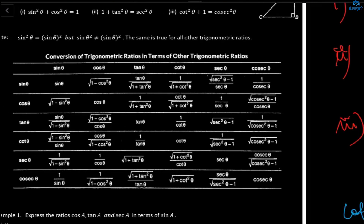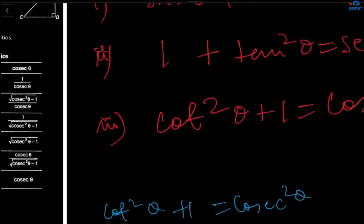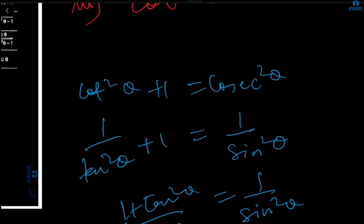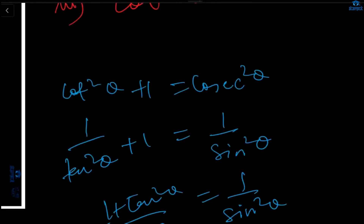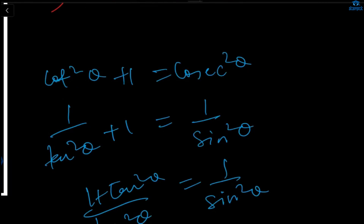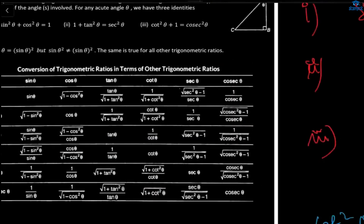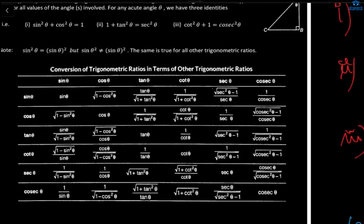Similarly, sinθ in terms of cotθ is 1/√(1 + cot²θ), and sinθ in terms of secθ is √(sec²θ - 1)/secθ. Cosθ can be written as √(1 - sin²θ) from the first identity, as 1/√(1 + tan²θ), or as cotθ/√(1 + cot²θ). If you learn the complete chart that is well and good; if you learn the three main identities plus the basic relationships, that is also sufficient. You can always derive the others when needed during proofs.